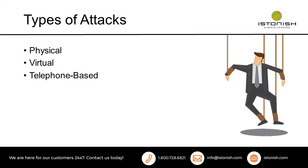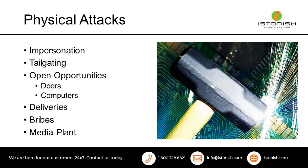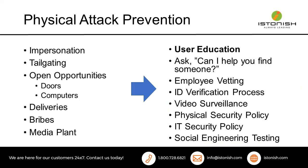Physical attacks are usually done by impersonation, possibly tailgating — somebody following an authorized individual into a controlled location — or exploiting open opportunities like open doors, open computers, deliveries, or bribes. It could also be a media plant, where somebody puts a USB drive or flash storage device into your physical location, and that's how they're able to get in and cause havoc.